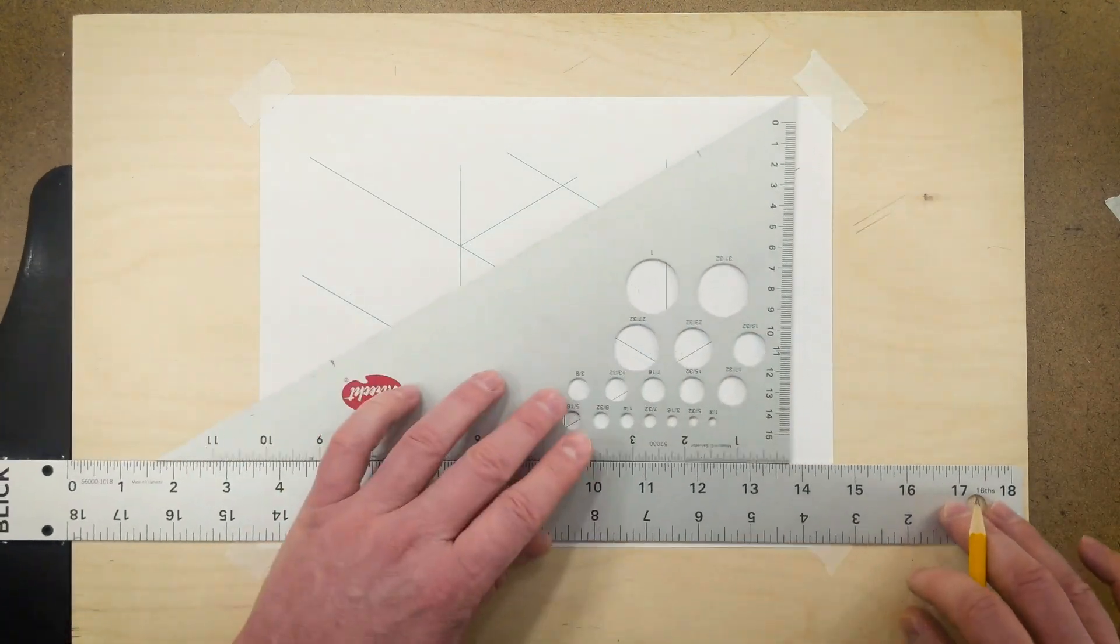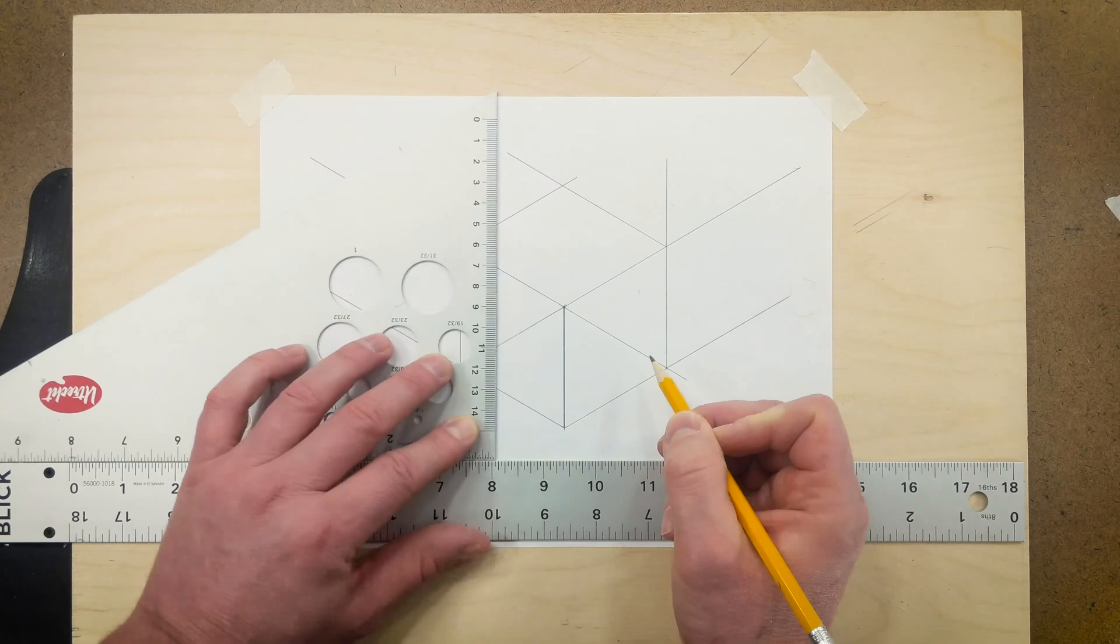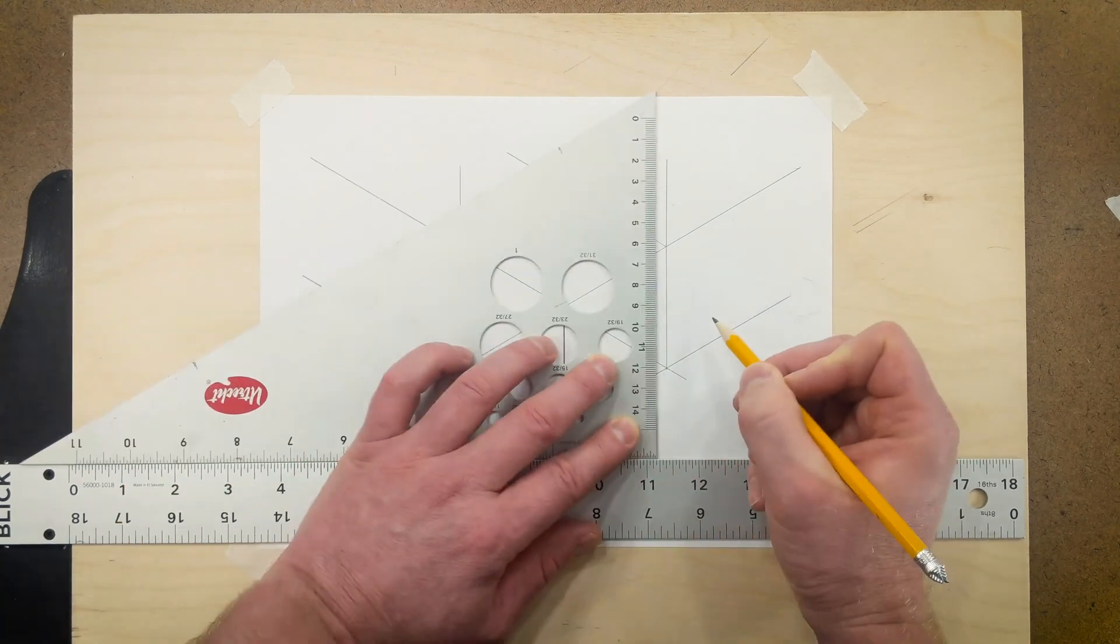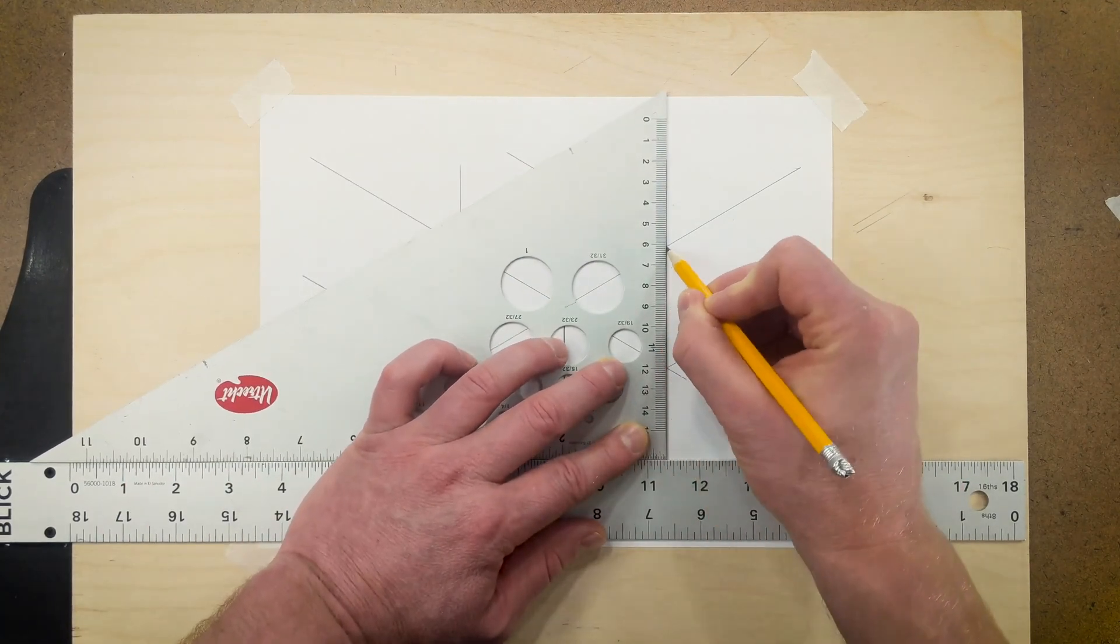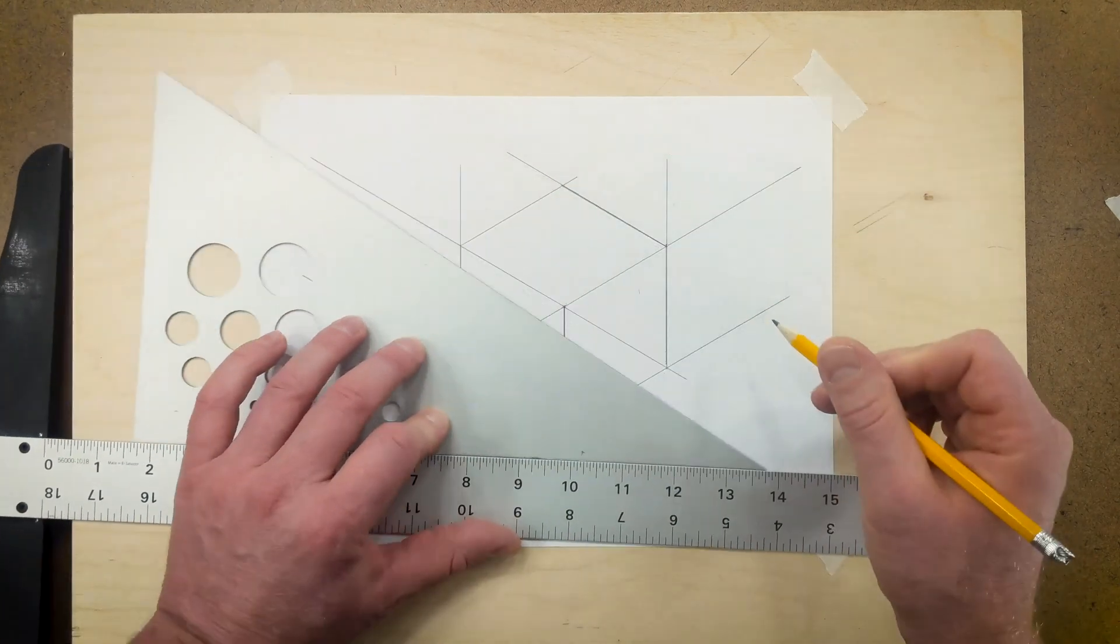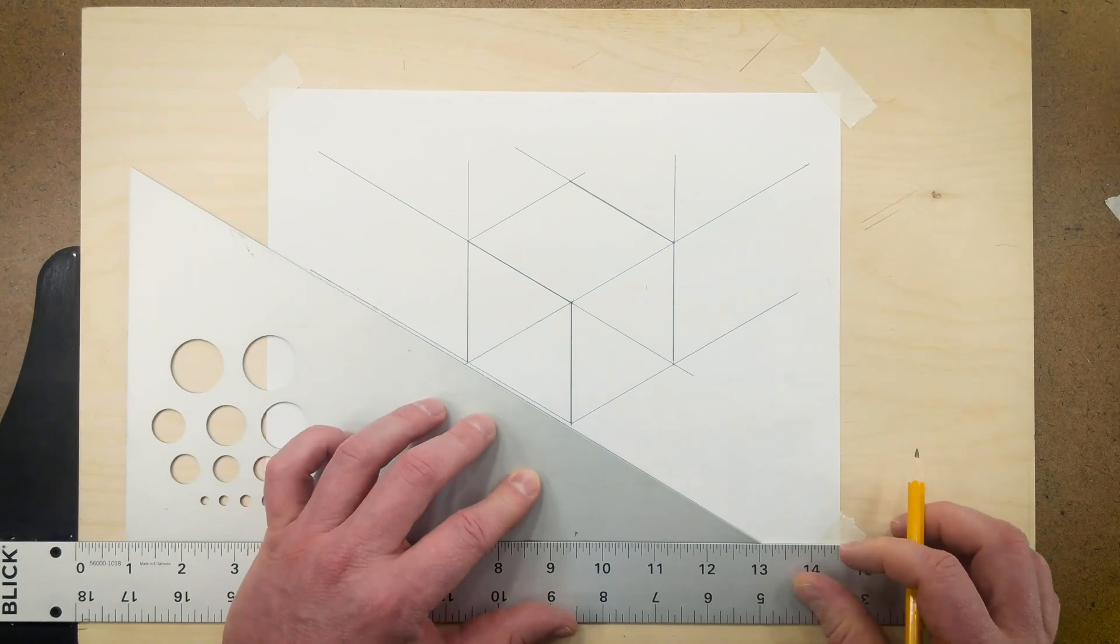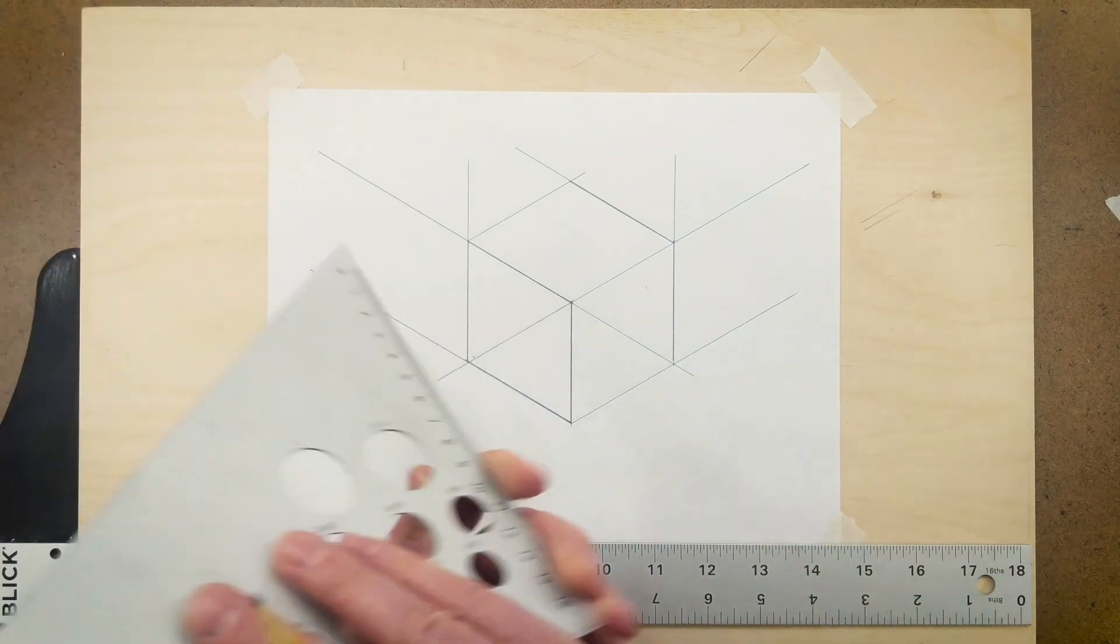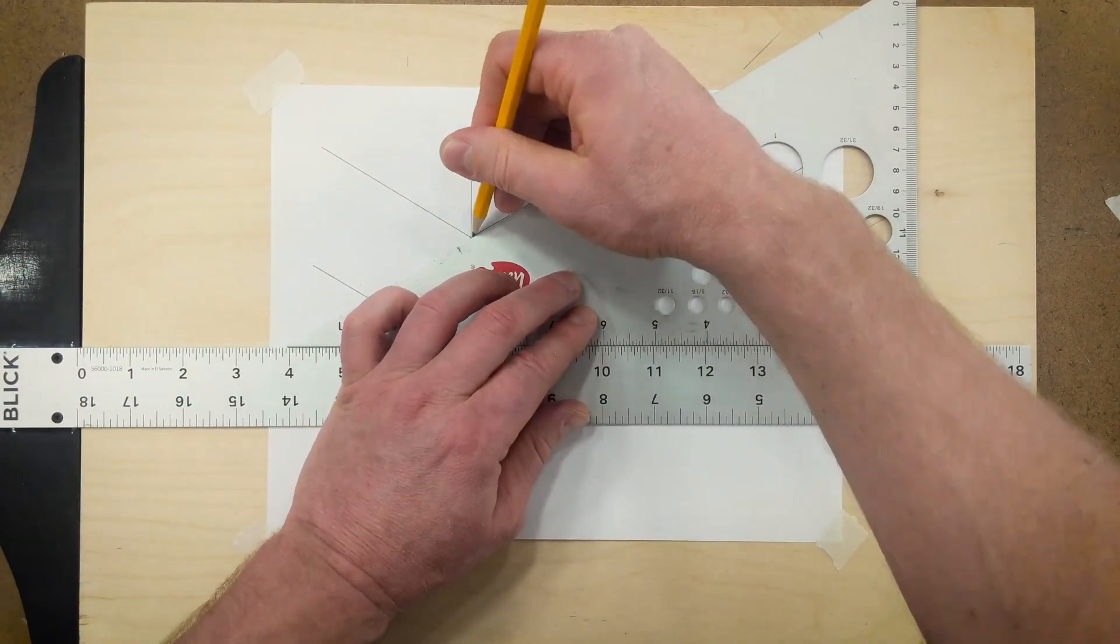If you've drawn lightly, you can now go back in and darken your lines. You can draw all sets of lines that are parallel at the same time to make it easier for yourself. Then you can flip your triangles and finally draw the other angle.